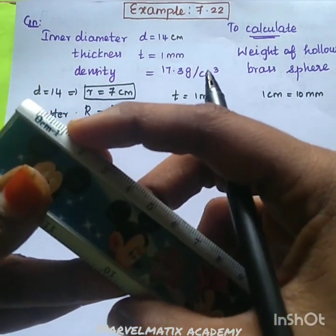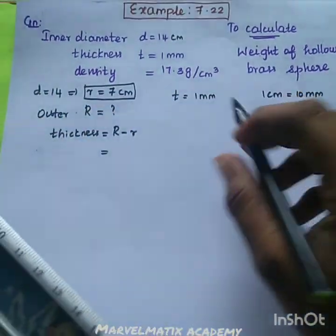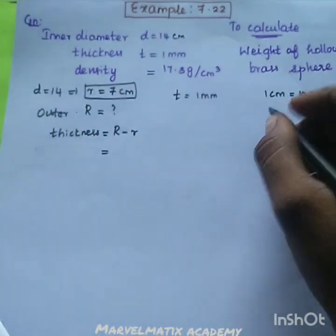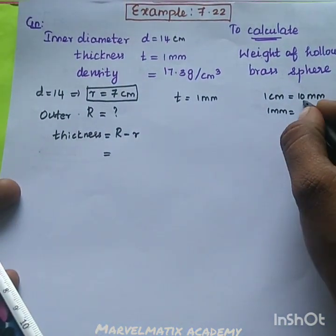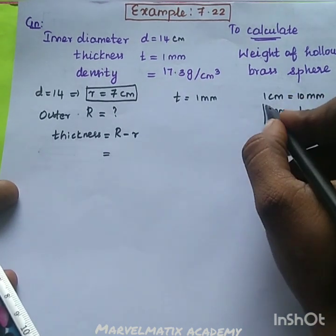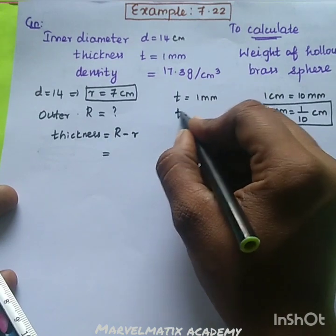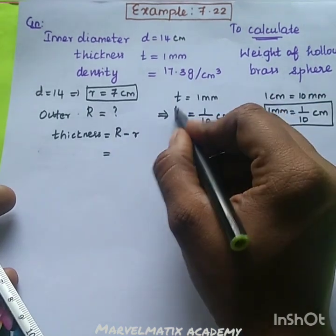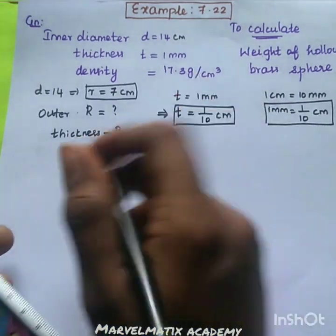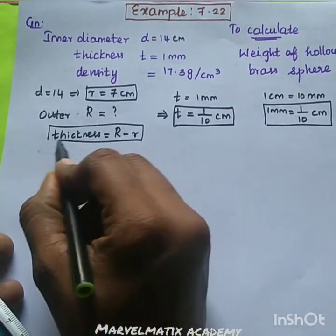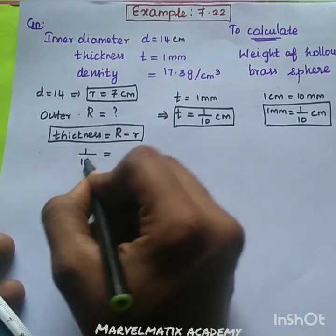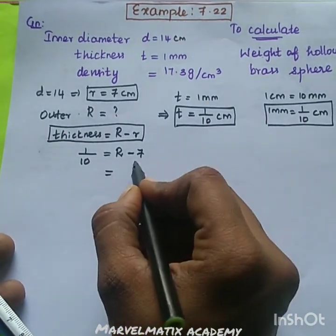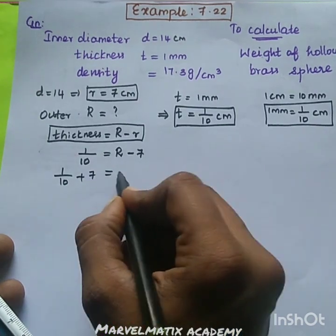Correct. 1 cm equals 10 mm. But we have to get 1 mm. So we have to do this: 1 mm equals 1/10 cm. So the thickness is 1/10 cm. All the thickness is 1/10. 1/10 is equal to — radius R is equal to inner radius r = 7, so capital R is equal to 7 plus 1/10.